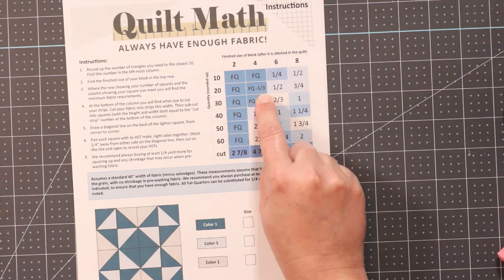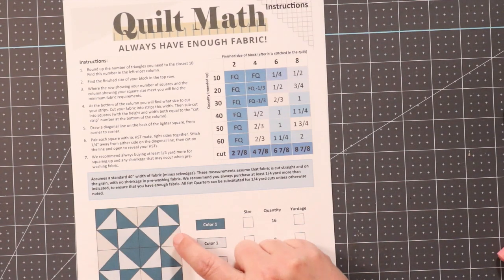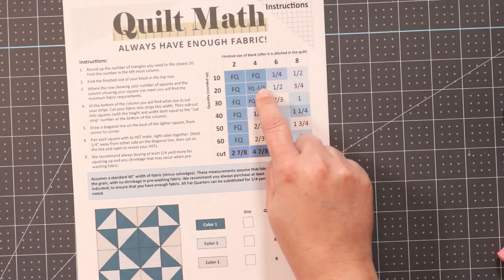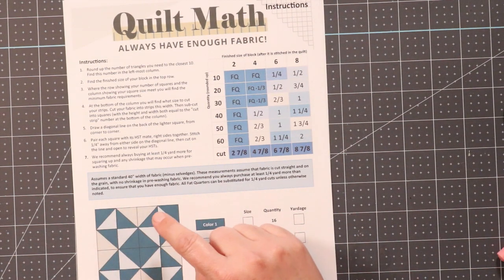If it doesn't indicate a different yardage, then a quarter yard of yardage will be fine, so I can use a fat quarter or a quarter yard of my color 2, and since I have 8 of color 3, that would be the same as well, and it's that simple for me to know exactly how much yardage I need on my quilt.